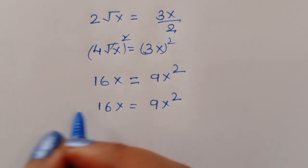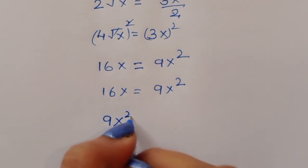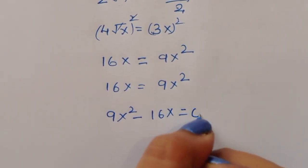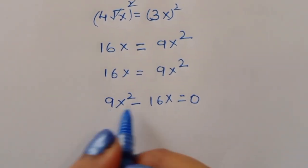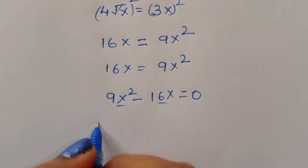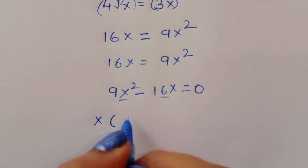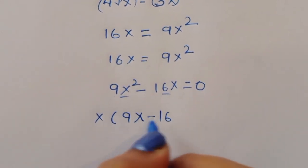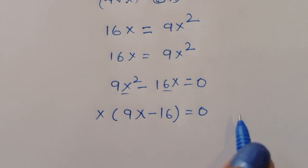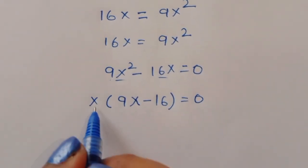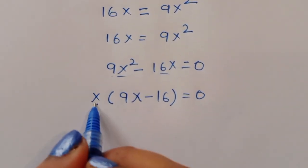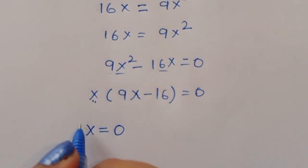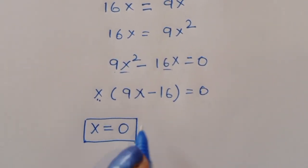Rearranging: 9x squared minus 16x equals 0. Taking x as a common factor, we get x times (9x minus 16) equals 0. This gives two solutions; the first is x equals 0.